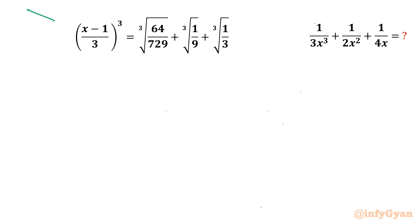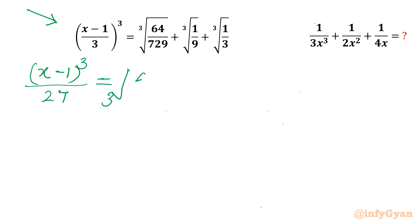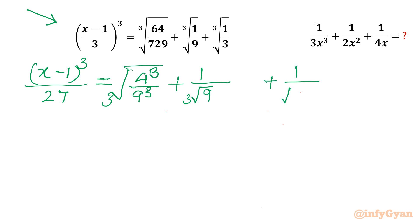The given equation is this one. I will begin with the equation: x minus 1 whole cube, and denominator will be 3 cube, so 27. We can write the right-hand side: 64 is 4 cube, 729 is 9 cube. Using such a property, I can write this as 1 over cube root of 9, and the third term as 1 over cube root of 3.